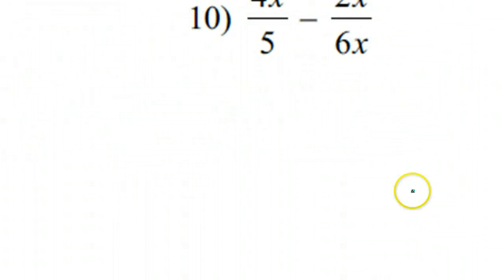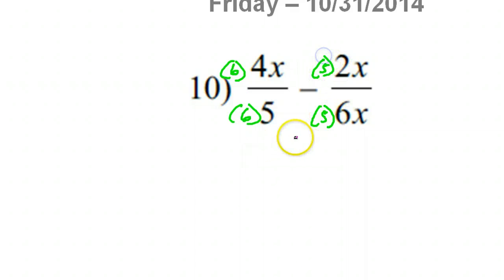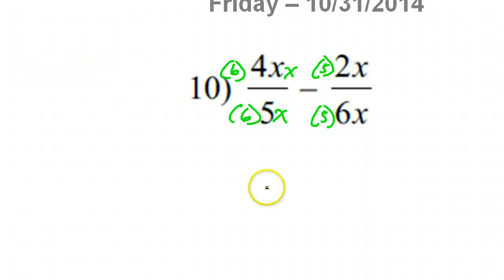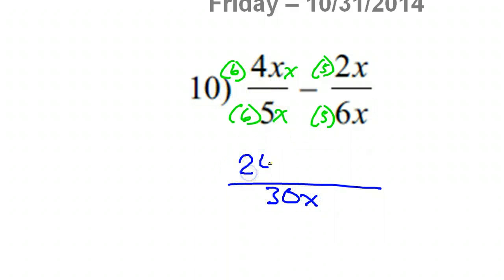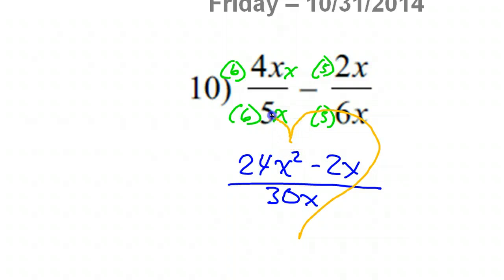How about number 10? It's kind of the same thing. This one needs a 6 top and bottom; this one needs a 5 top and bottom. Now they're both 30. But this side needs an x top and bottom. Now they're both 30x. Once I have like denominators, I can go ahead and subtract. So my like denominator is 30x. 6 times 4 is 24. So I have 24x squared minus 2x. What do all three of these have in common? They all have 2x in common — that's the GCF.